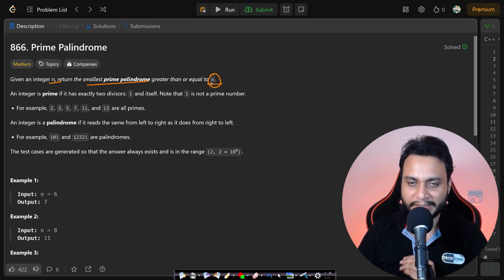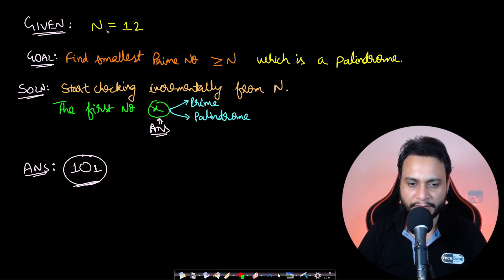So the number should be a prime number, it should be greater than or equal to n, and it has to be a palindrome. Let's look at an example for better understanding. Let's say our given n value is 12.